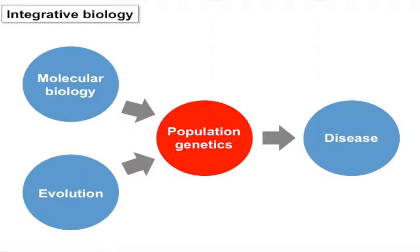Just knowing this variation is only part of the question, because population genetics is also relevant towards human health and disease. What I'm particularly interested in is why do some populations happen to have certain diseases and other populations happen not to have them?